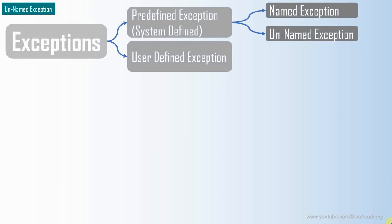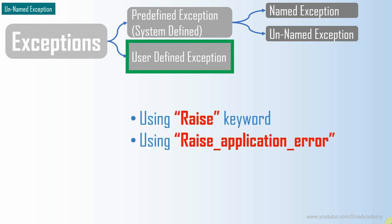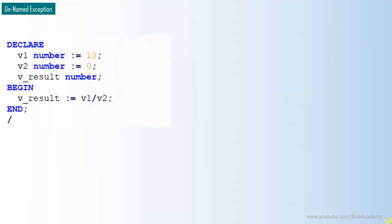In the previous examples we have seen about the types of exceptions — we know there are predefined exceptions and user-defined exceptions. This video will specifically talk about the user-defined exception. We can handle user-defined exceptions mainly by two ways: one is using the RAISE keyword, and another is using RAISE_APPLICATION_ERROR. We'll understand better with an example.